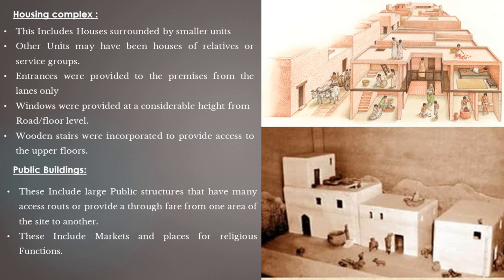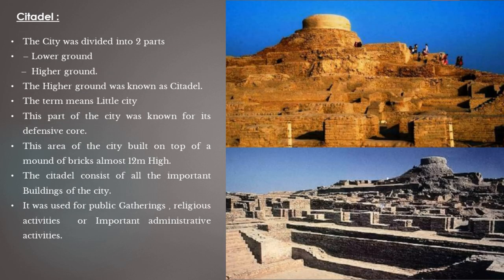Public buildings included large structures with access routes or thoroughfares from one area to another, including marketplaces and religious function places. The most important structure of the Indus Valley Civilization was the citadel, located on the higher ground of the city. The city was divided into two parts — lower ground and high ground — and the high ground was known as the citadel, meaning 'little city.' This area was built on top of a mound of bricks almost 12 meters high and served as the defensive core, used for public gatherings, religious activities, and important administrative activities.